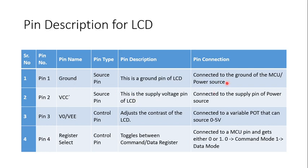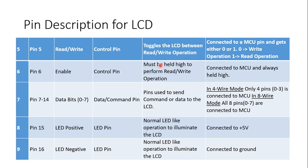Pin number 1 is ground, connected to the ground of the microcontroller power source. Pin number 2 is VCC, connected to the supply pin of the power source. Pin number 3 adjusts the contrast of the LCD and is connected to a variable port that can be sourced by 0 to 5 volts. Pin number 4 is register select, used to toggle between command and data — when 0 it is command mode, when 1 it is data mode. Pin number 6 is enable. It must be held high to perform a read or write operation; you have to give a pulse at the enable pin by transitioning from low to high and back for any read or write operation.